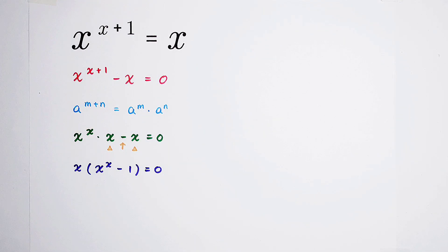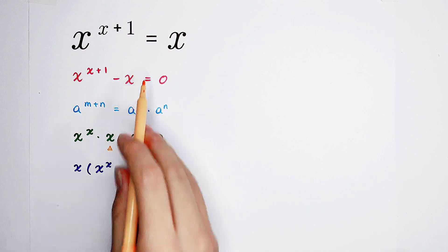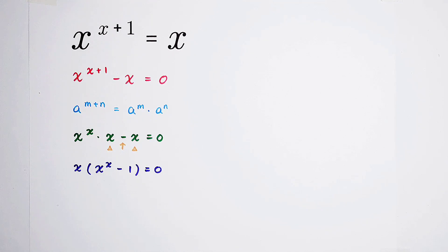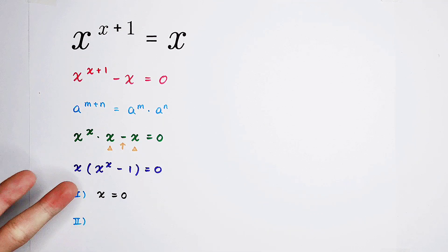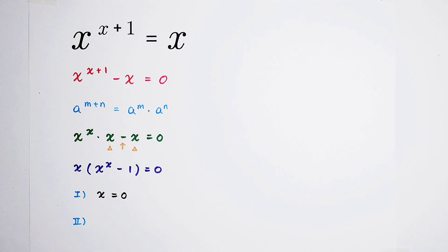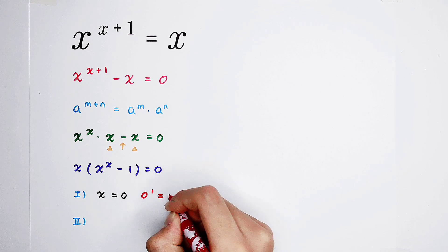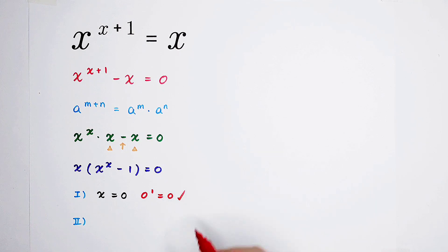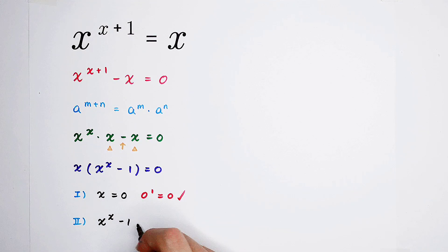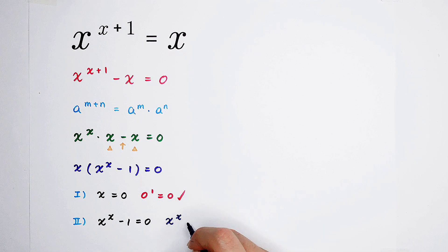Please don't solve it that way — always use subtraction. So now we have two cases. If x is 0, of course it works. We can check: the left hand side is 0 to the power of 0 plus 1, which is 0 to the power of 1, equal to 0, and the right hand side is 0. So x equals 0 is one of the roots. The second case is x to the power of x minus 1 equals 0, which means x to the power of x equals 1.